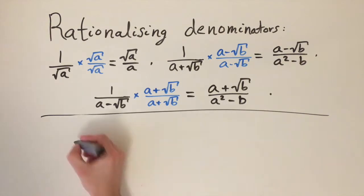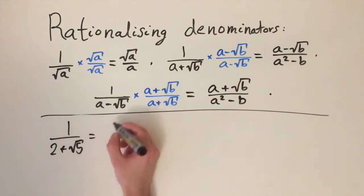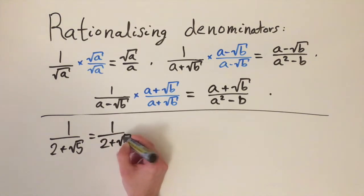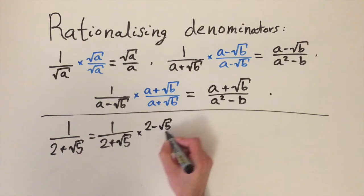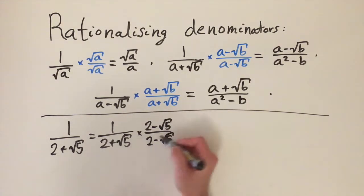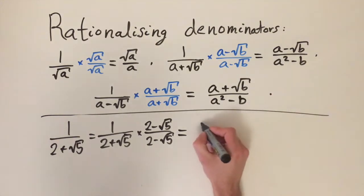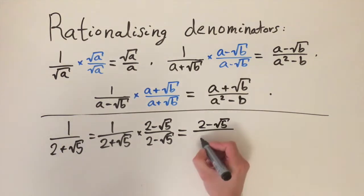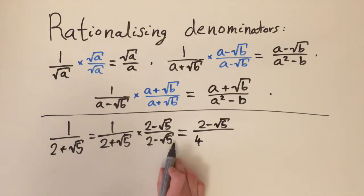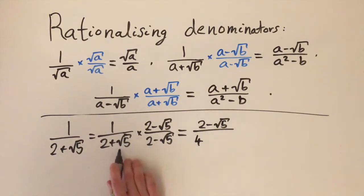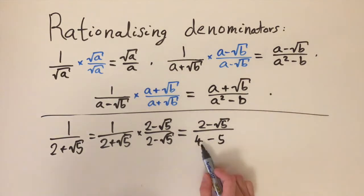Now let's do some examples testing these formulas. Starting with 1 divided by 2 plus the square root of 5, where a is 2 and b is 5. We take that number and multiply top and bottom by the denominator with the sign reversed: 2 minus the square root of 5 divided by 2 minus the square root of 5. We're multiplying by 1, so we're not changing the value. On the top we get 2 minus the square root of 5. On the bottom, 2 squared is 4, the irrational cross terms cancel out, and the square root of 5 times minus the square root of 5 gives minus 5.